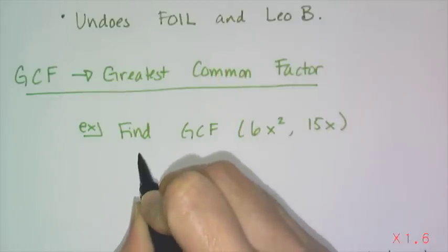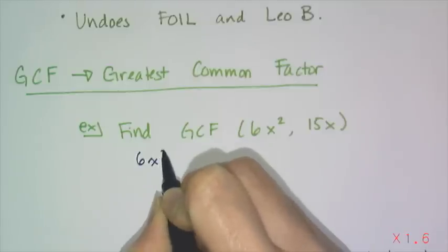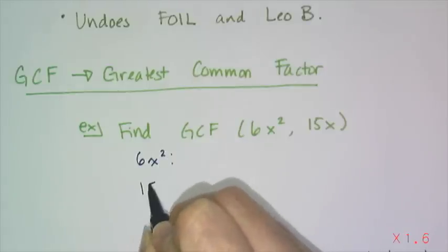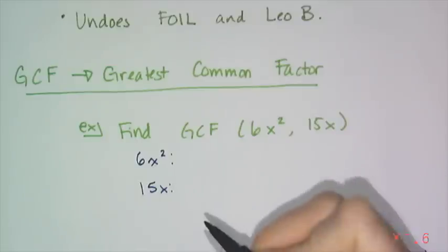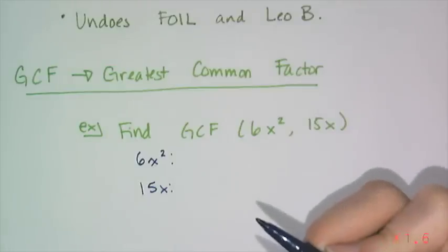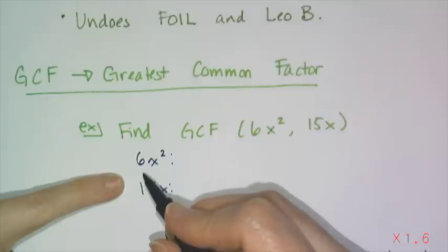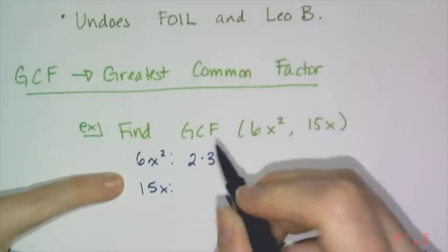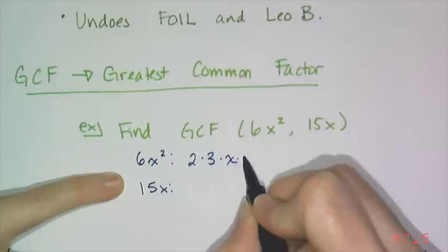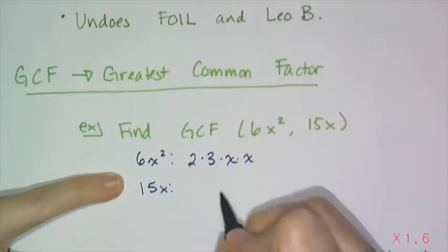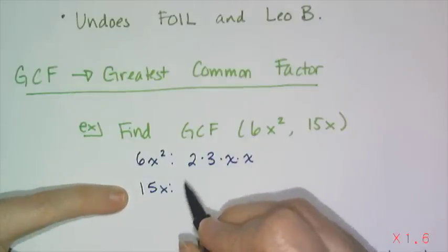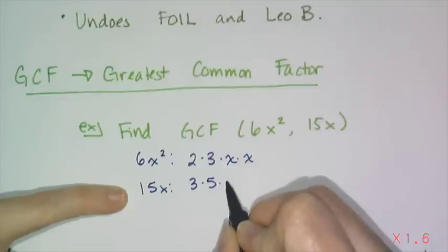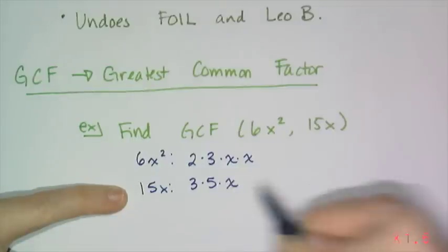So what I'm going to do is I'm going to take each term, 6x² and 15x, and do a kind of prime factorization on it. So I'm going to take 6 and break it down into 2 times 3, which are prime, and I'm going to break x up by expanding it out. I'm going to do the same thing with 15. That's 3 times 5, and that's just x to the first power.